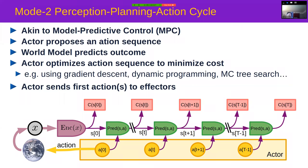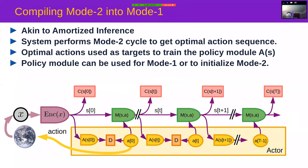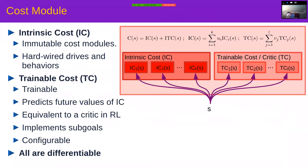The cost function computes the cost, and by some mechanism — possibly gradient-based — the actor optimizes the imagined sequence of actions to minimize the cost according to the model's predictions. Then the first action or first few actions are sent to the effectors in the world. This is classic model predictive control, used all the time in robotics and optimal control, except that here we're going to learn the world model.